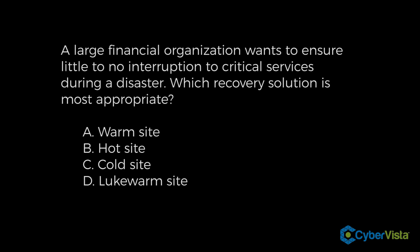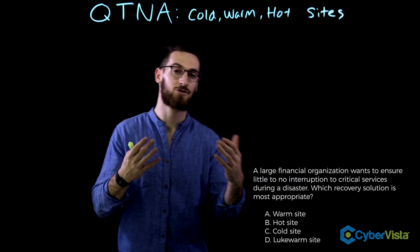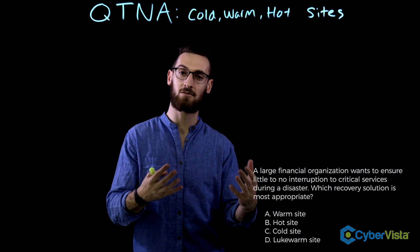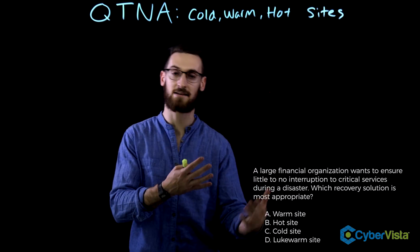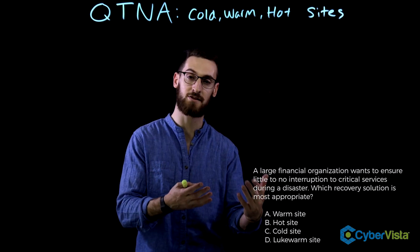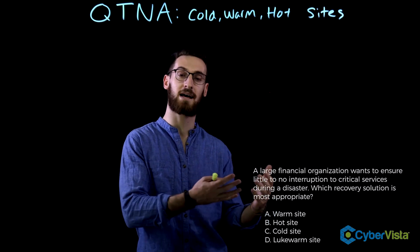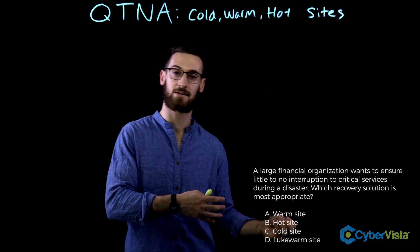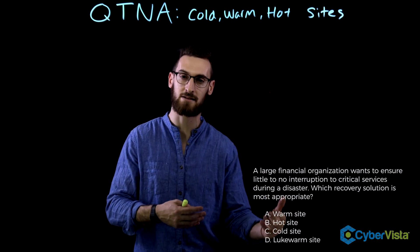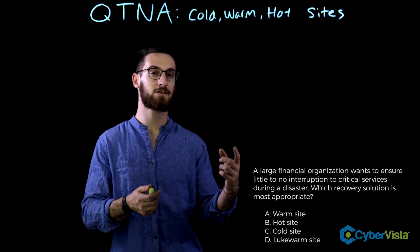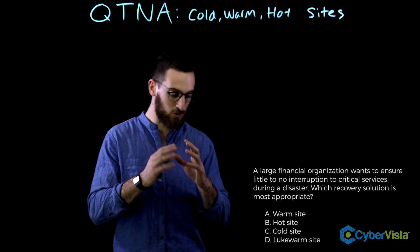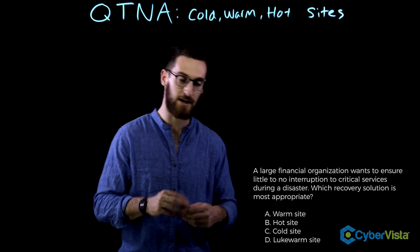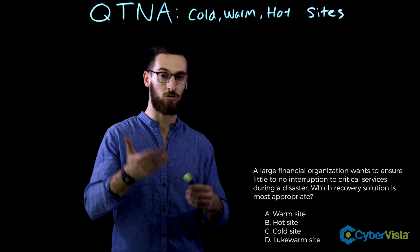We can eliminate that option, so we're left with warm, hot, and cold. In a disaster, sometimes our primary site where we do most of our processing or critical services may become unavailable. So we want to have a backup site, an alternate site — we want redundancy. That keyword in security: availability. There are typically three ways to set up an alternate site: cold, warm, or hot.